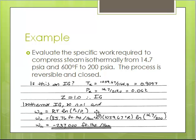If it's an ideal gas and it's isothermal, then work is RT log of the ratio of the pressures. I'm able to calculate that and get a good rough answer - 237,000 foot-pounds force per pound mass of work would be required. It's negative because it's work input.